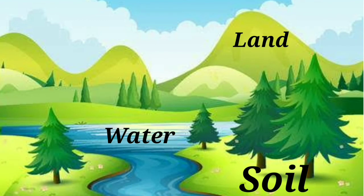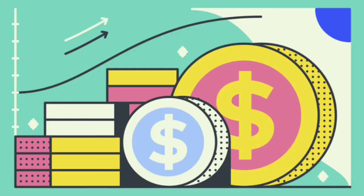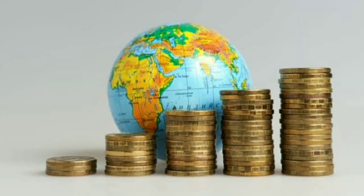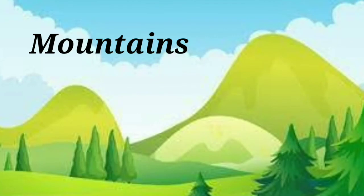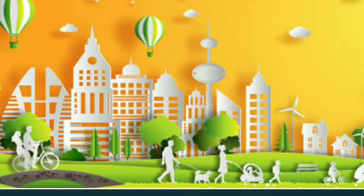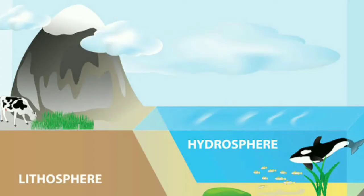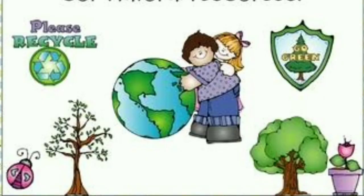Among all these abiotic resources, land, soil and water are the most important land resources. Land resources are even the source of economic wealth of a country. The wealth of a country depends on the quantity and quality of its resources. Land resources even influence the climate of a place. Land, soil and water form an important part of our life as they help in the sustenance of life of plants, animals and human beings.